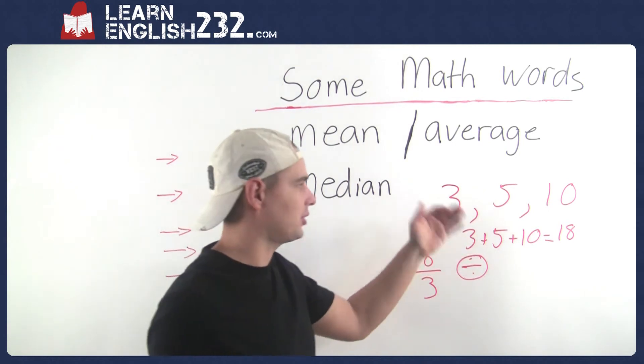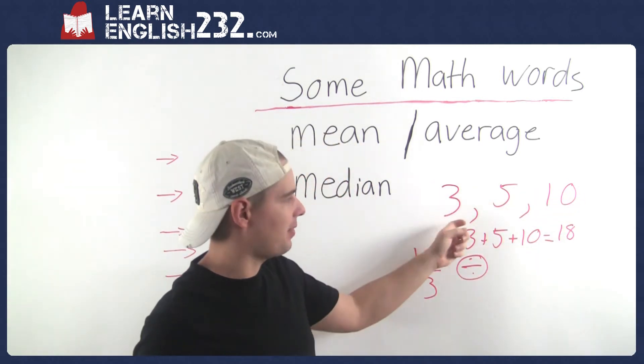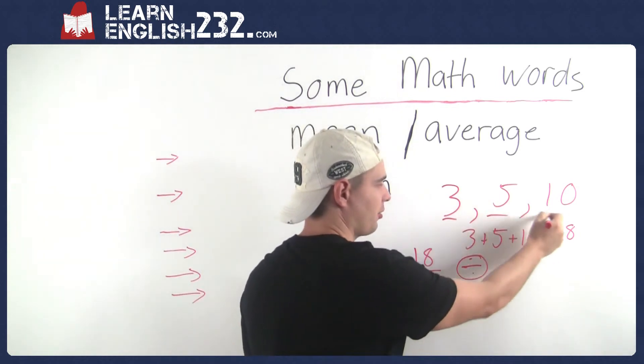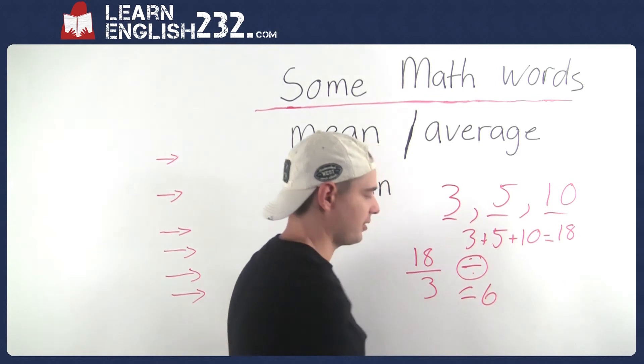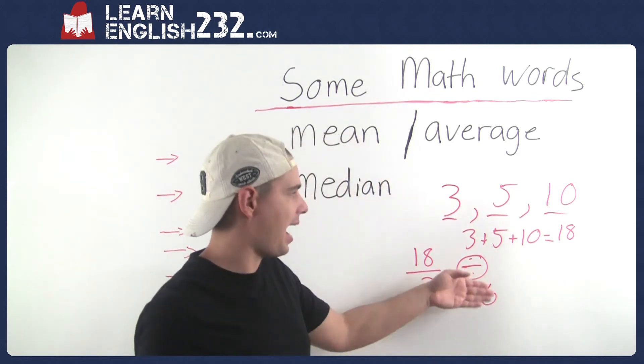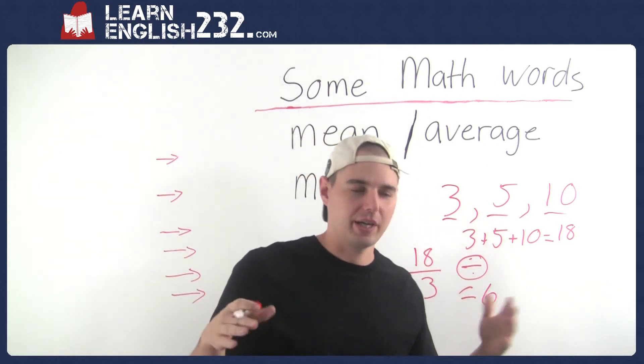So the way you take an average, you add three numbers up and then you divide it by the number of them. So there's one, two, three of them, divided. So the guy on average gets six points. So that's the average or the mean of these three numbers. I'm sure you've seen this growing up. Obviously, that's how you use it.